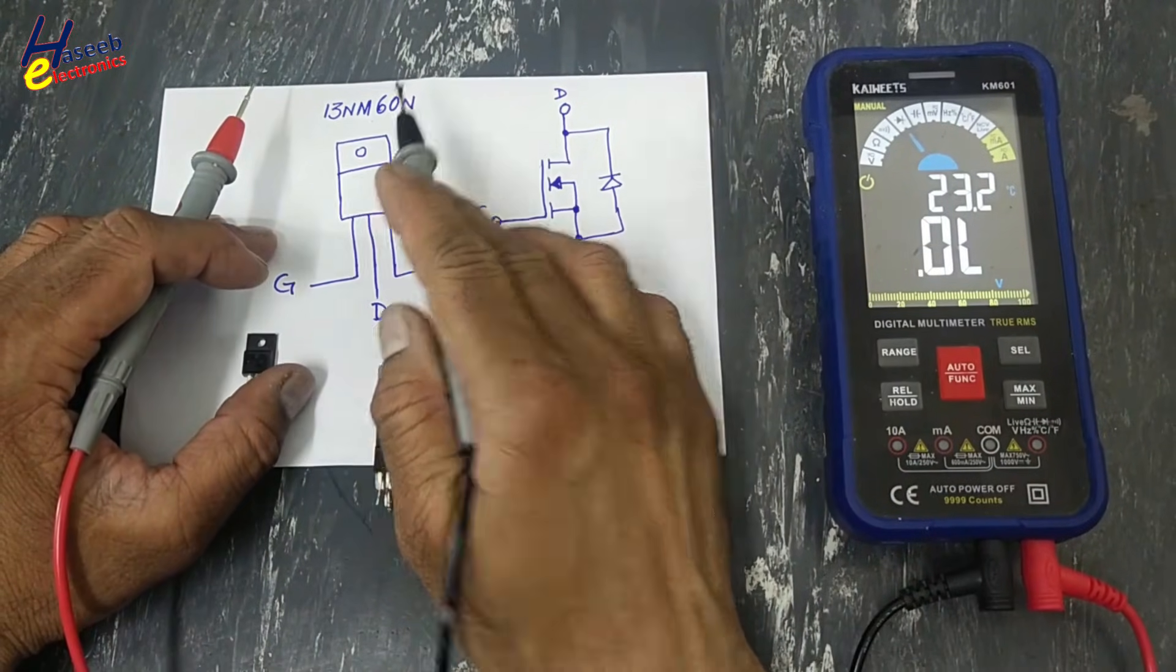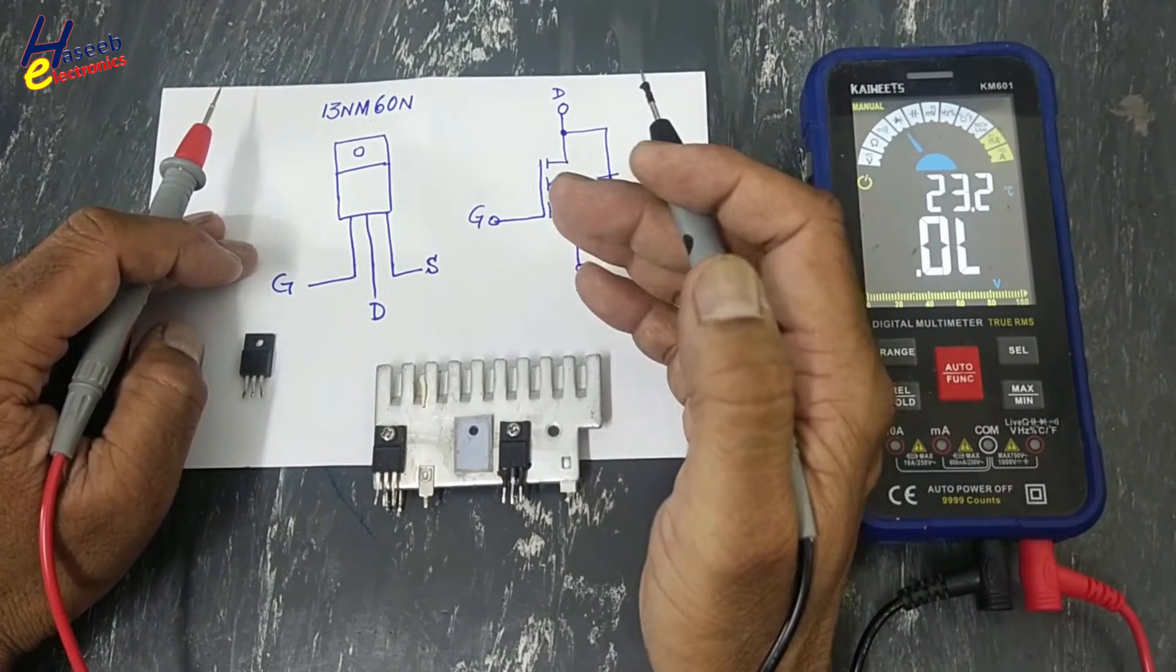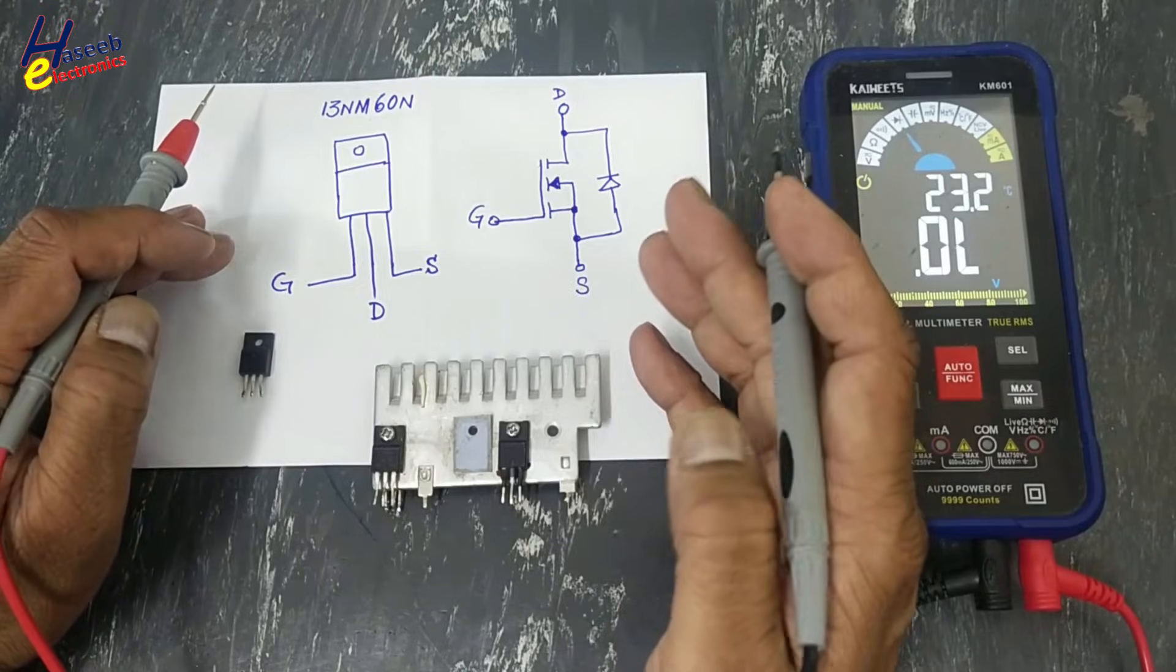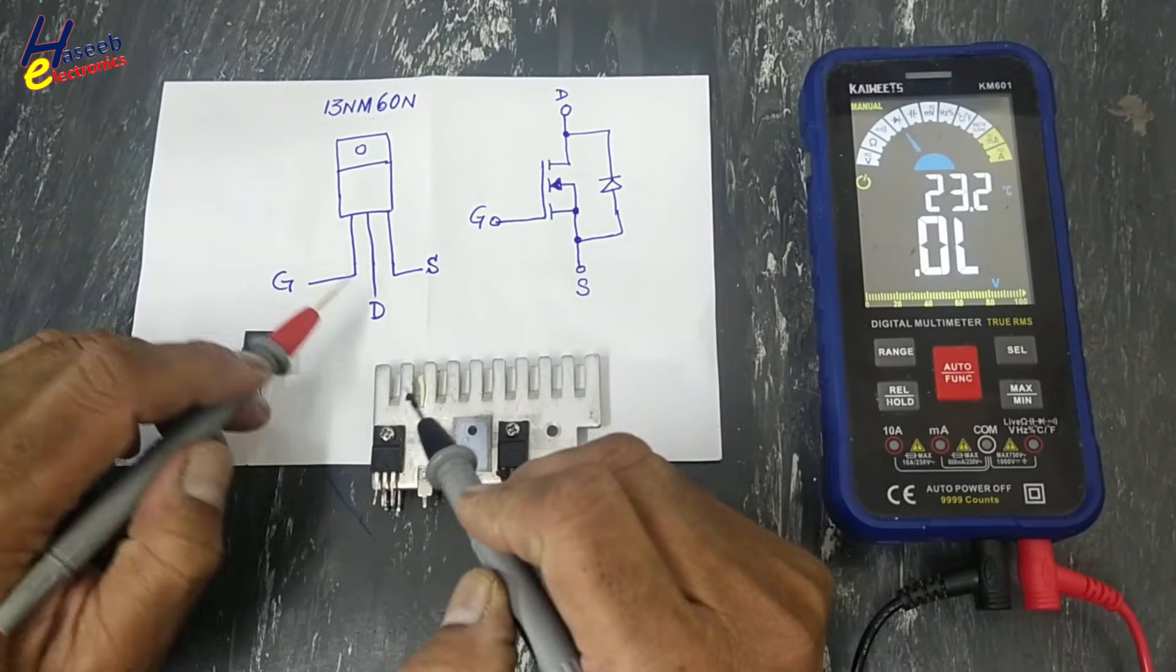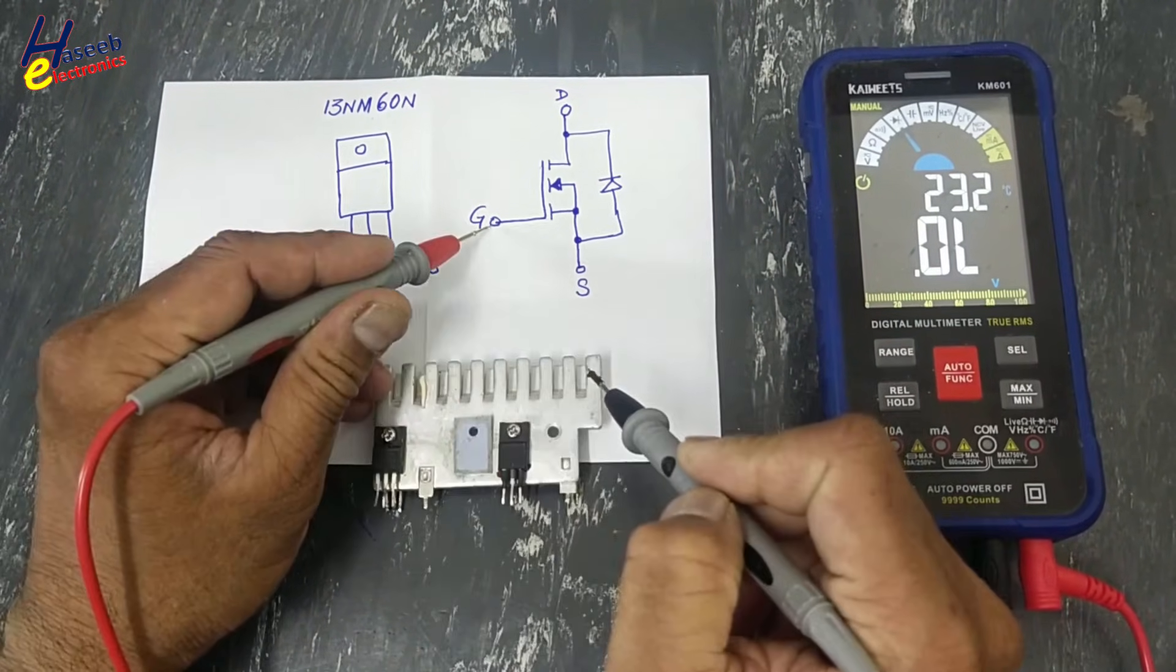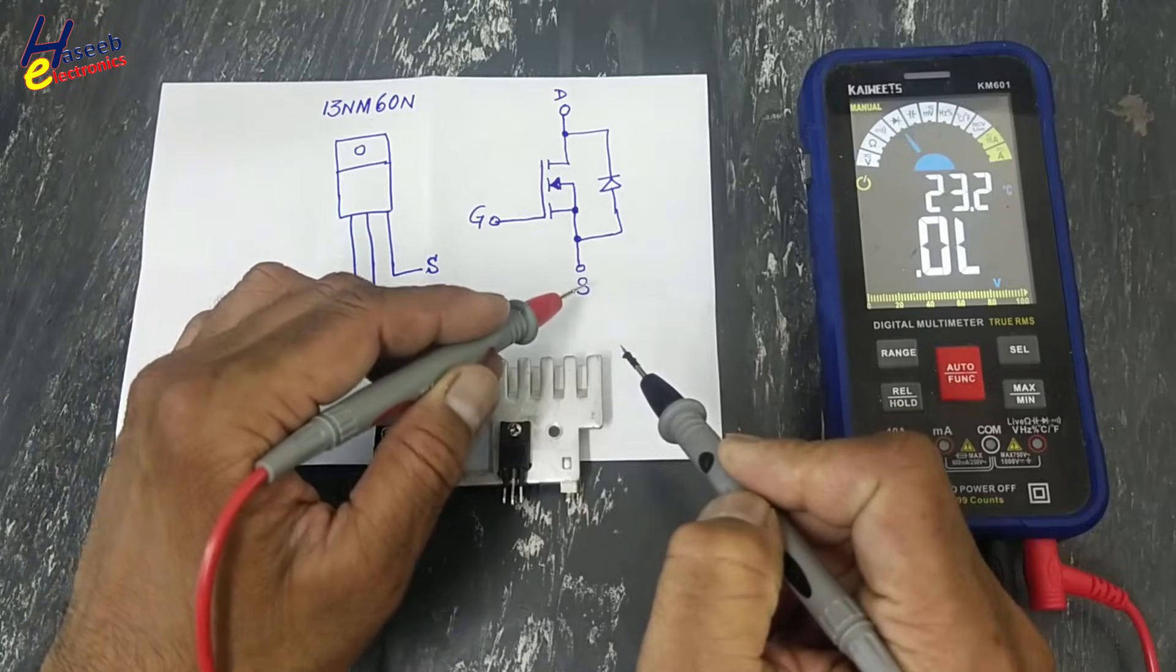13NM60N channel power MOSFET used in power supplies. Three pins: gate pin, drain pin, and source pin.